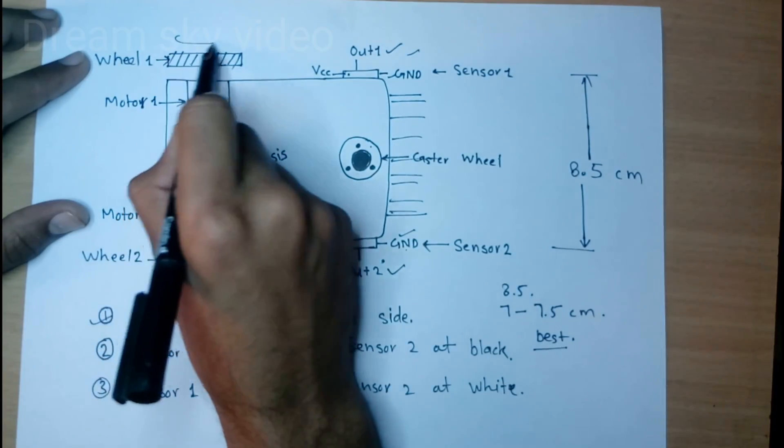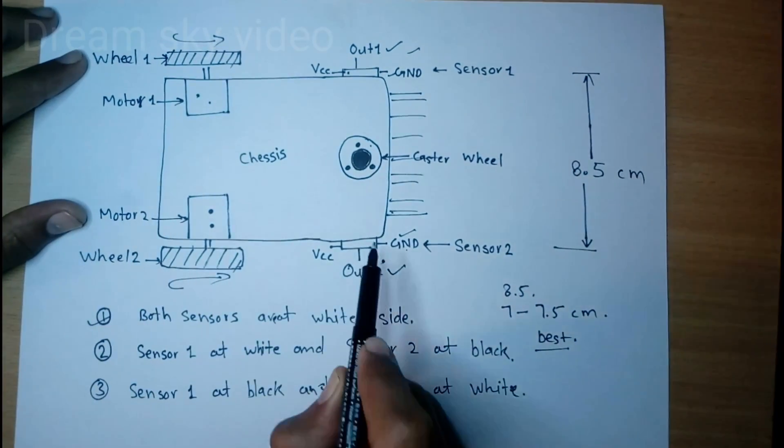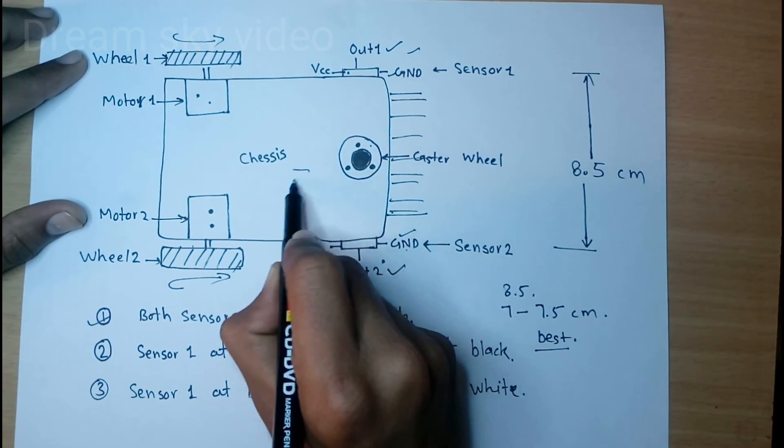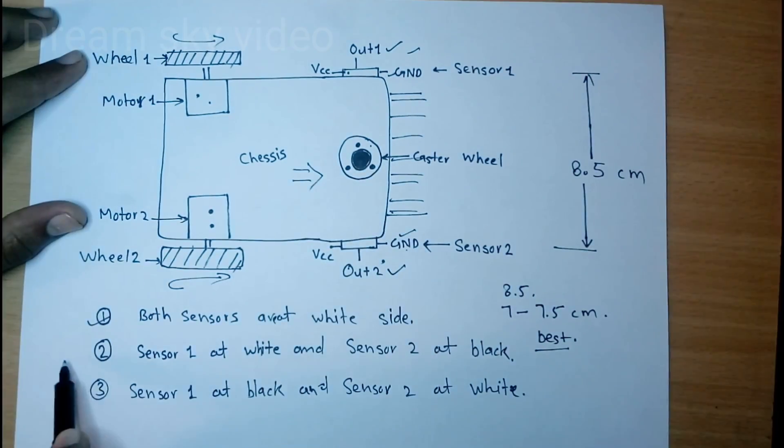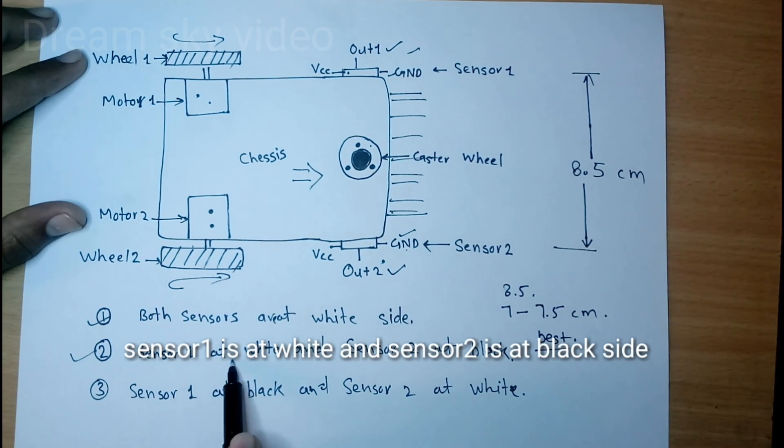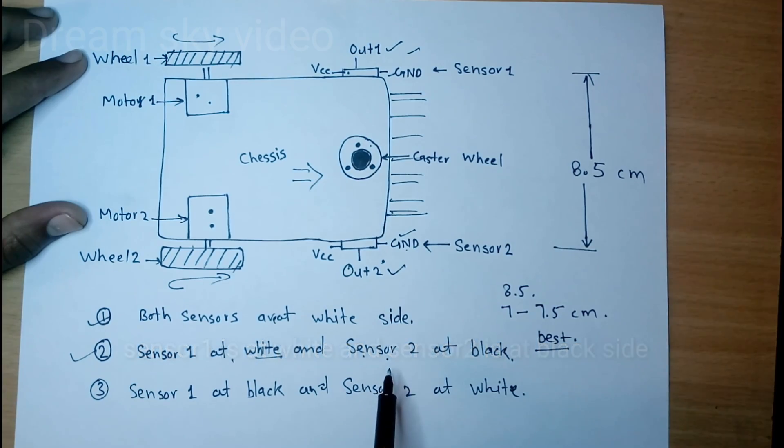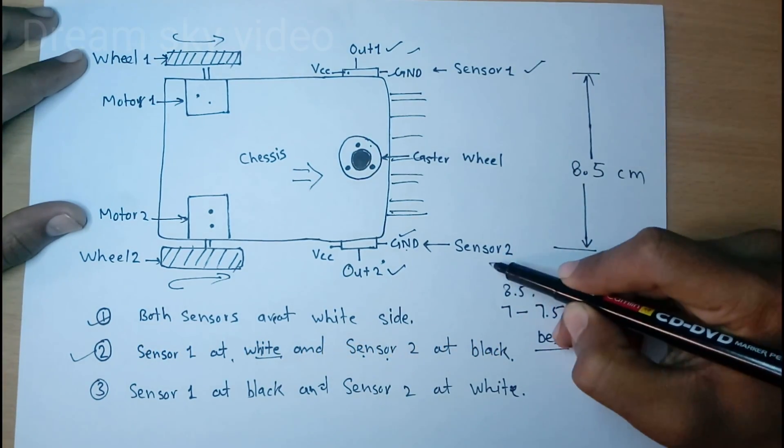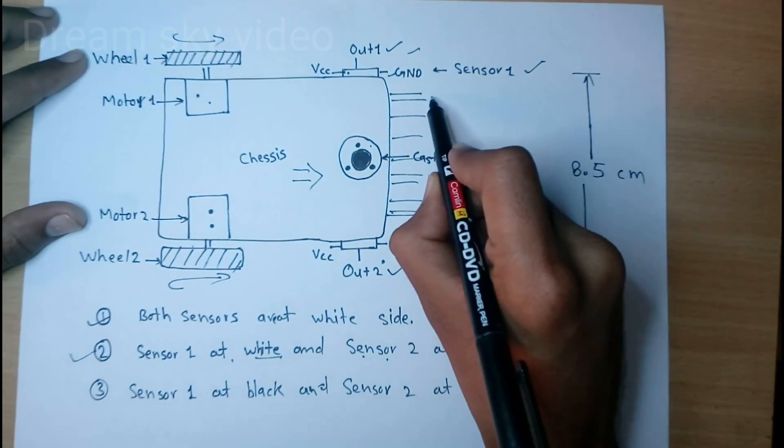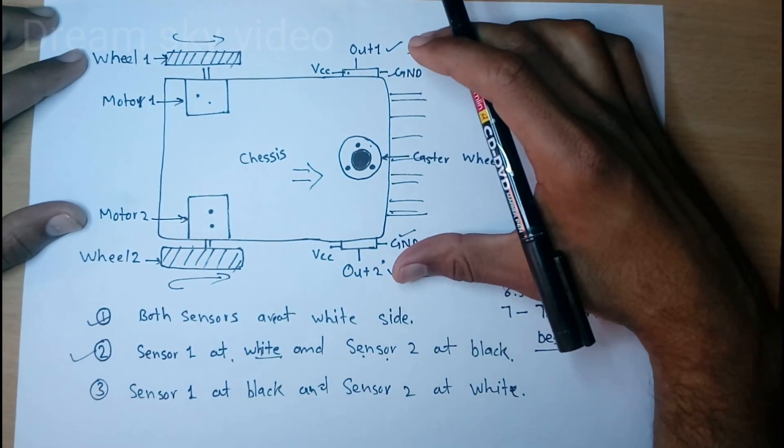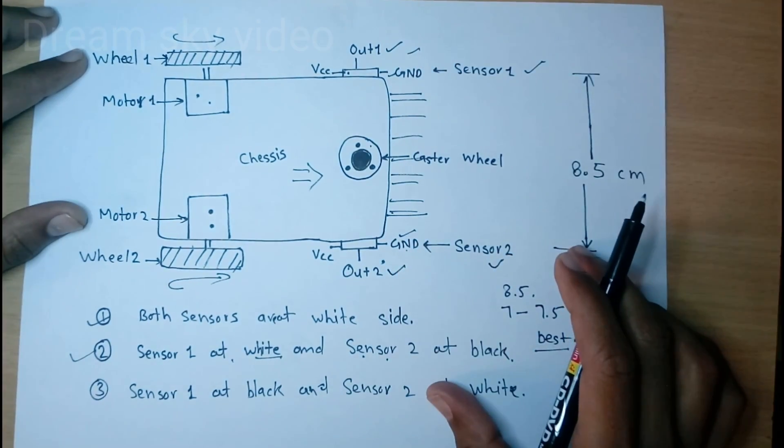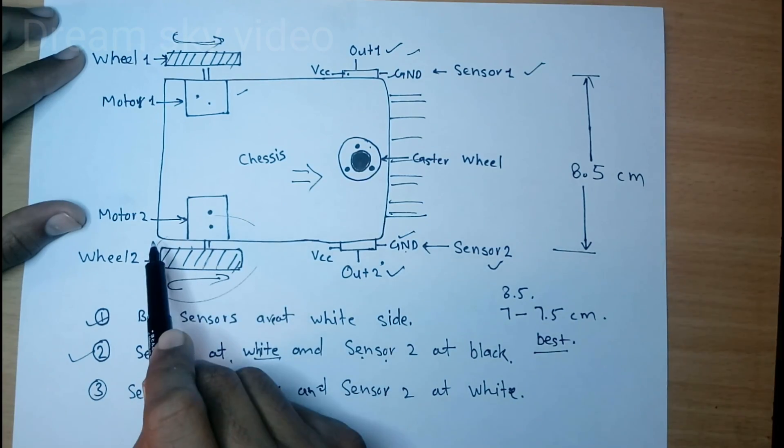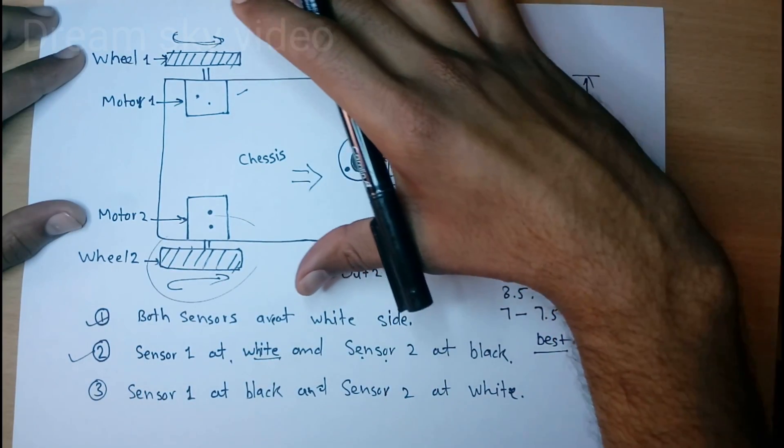In second condition, when sensor one at white and sensor two at black side, this sensor at white side and this is at black side. In this condition car move in right side. This motor rotate forward but this become a stop, so this rotate, this move in right side.